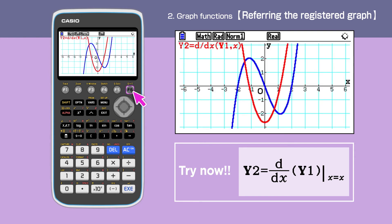Press F6 to draw both y1 and y2 graphs. Two graphs are displayed.